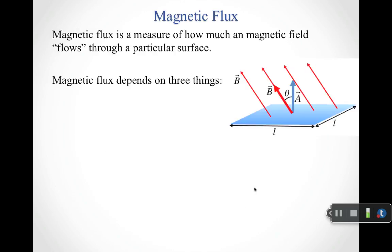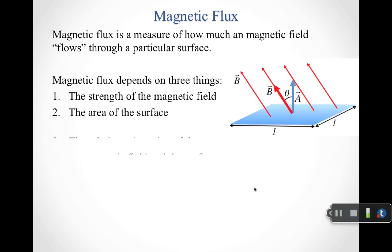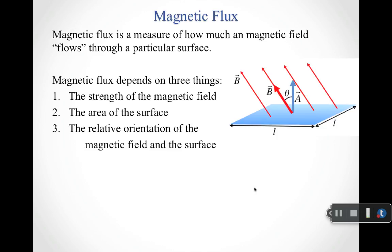In just an absolutely analogous way, magnetic flux is a measure of how much a magnetic field flows through a particular surface. The magnetic flux depends on three things: the strength of the magnetic field, the area of the surface, and the relative orientation of the magnetic field in the surface. If you wanted to increase the magnetic flux, you could increase the magnetic field — that would give you more field lines coming through your surface. You could increase the area of your surface. And you can increase the flux by lining up the magnetic field with the area vector for your surface. Here the area vector is not aligned with the magnetic field, so we're not getting the maximum value of magnetic flux.